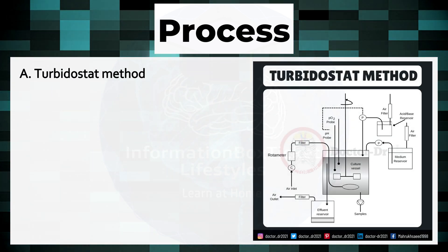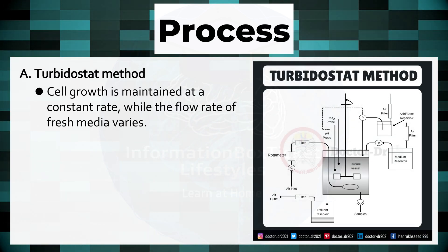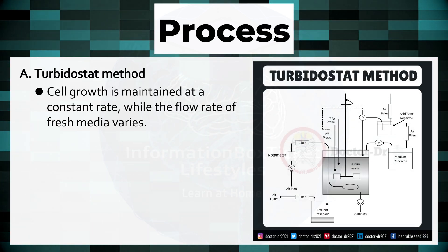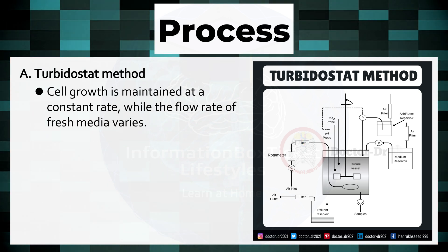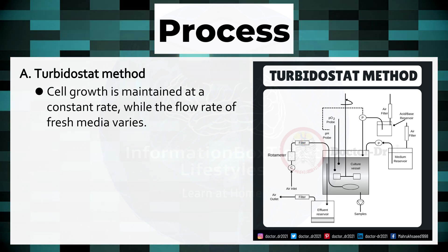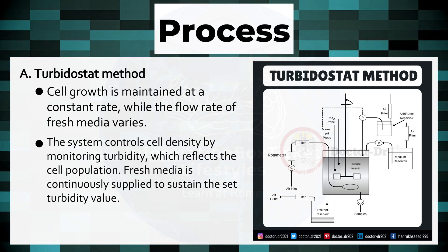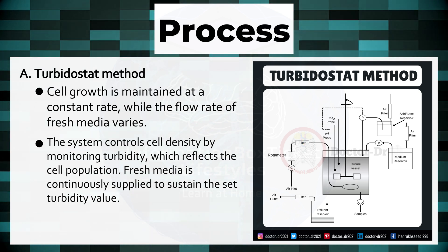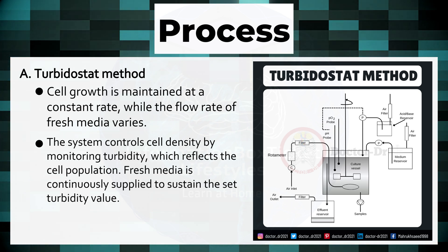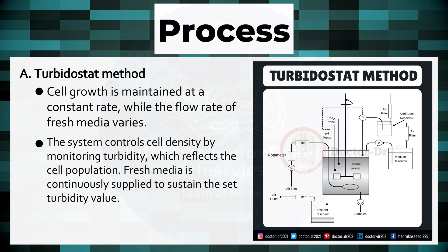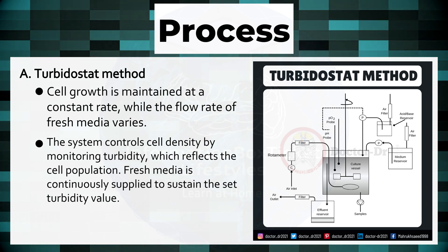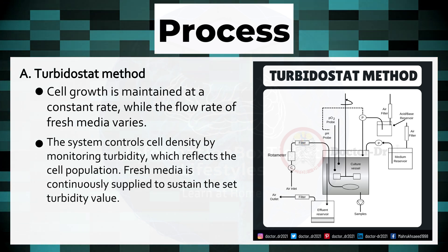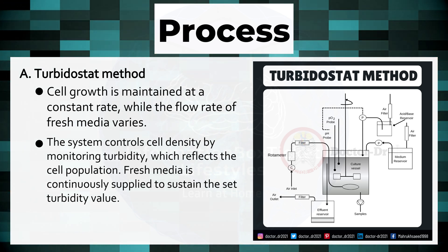Turbidostat Method. Cell growth is maintained at a constant rate, while the flow rate of fresh media varies. The system controls cell density by monitoring turbidity, which reflects the cell population. Fresh media is continuously supplied to sustain the set turbidity value.